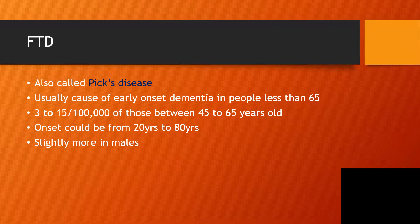Frontotemporal dementia, or FTD for short, is also called Pick's disease. So it's either you hear the word Pick's disease, frontotemporal dementia, or FTD. It is one of the causes of dementia in people less than 65 years old, and about 3 to 15 people will be affected out of 100,000 people between ages 45 to 65.